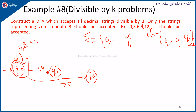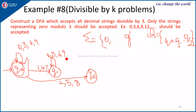Continuing Q0 transitions: inputs 1, 4, 7 go to Q1; inputs 2, 5, 8 go to Q2. For Q1: starting from value 1, appending 0 gives 10, and 10 mod 3 is 1, so stay in Q1. So for Q1, inputs 0, 3, 6, 9 stay in Q1. Appending digits 1, 6 gives 16, and 16 mod 3 is 1; 19 mod 3 is also 1, so inputs 0, 3, 6, 9 stay in Q1.